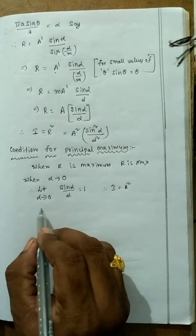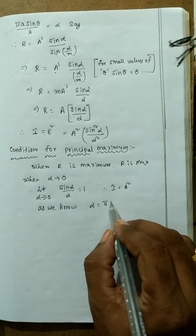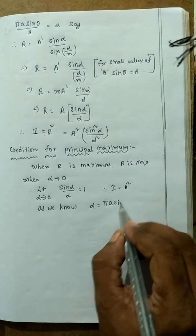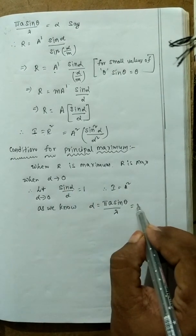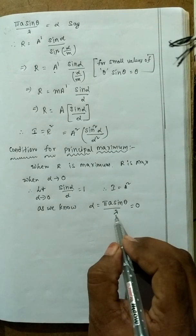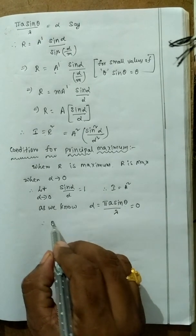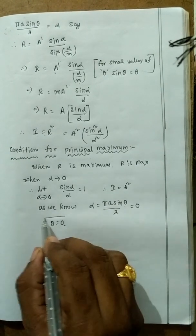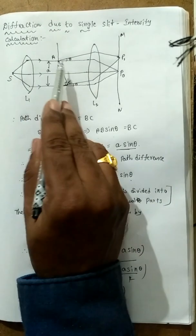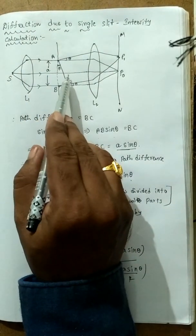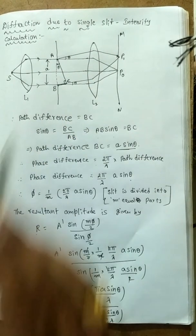Since α = πA sin θ / λ, α = 0 means π × A × sin θ = 0. Since π, A, and λ are not zero, we get θ = 0. So when θ = 0, we have the condition for principal maxima — the rays are not diffracted and reach the screen directly, giving maximum intensity.